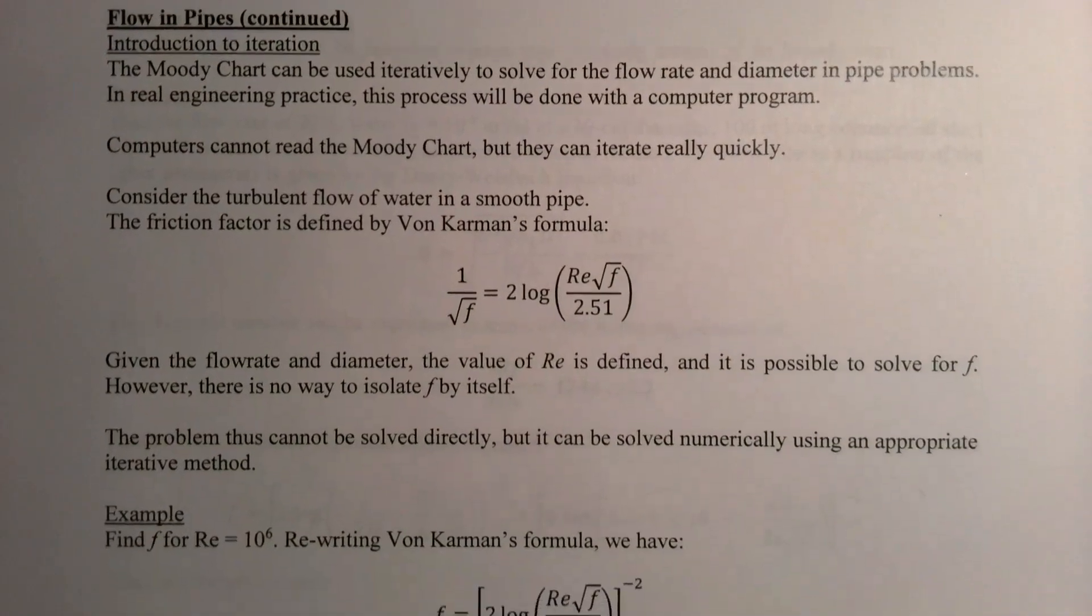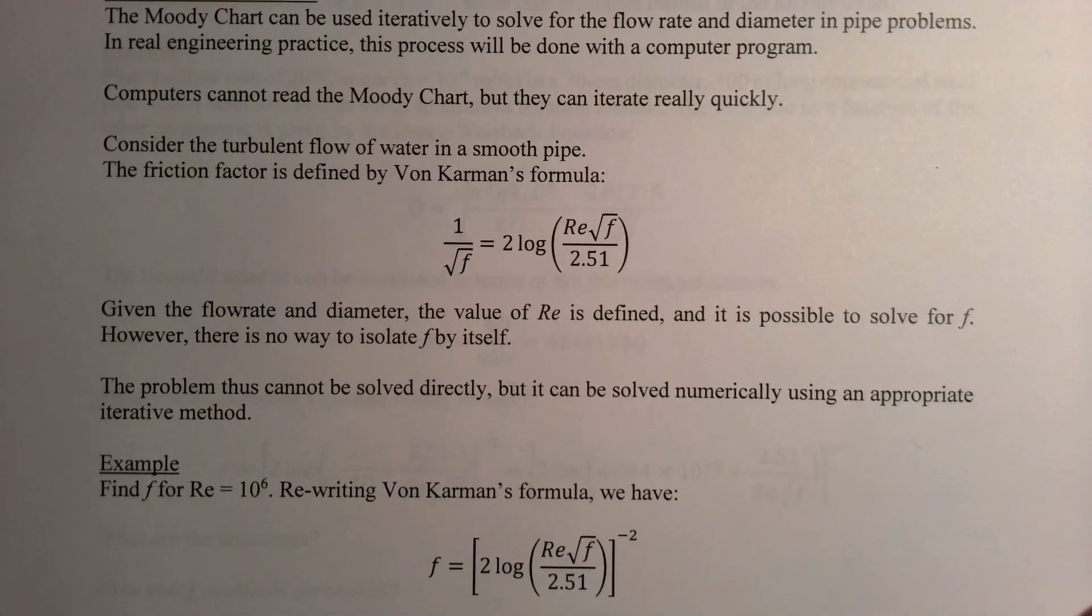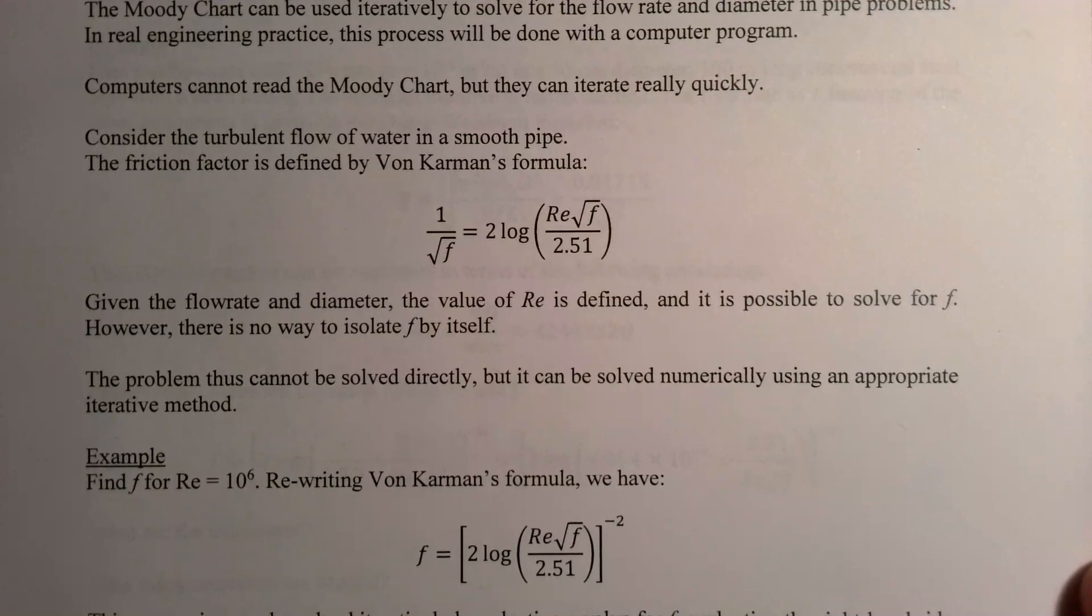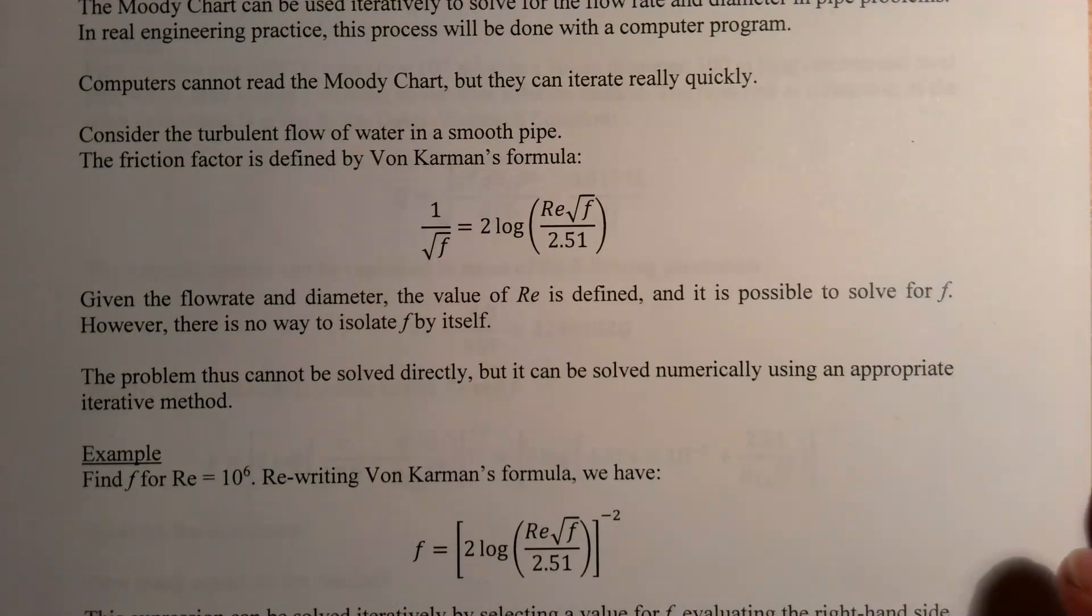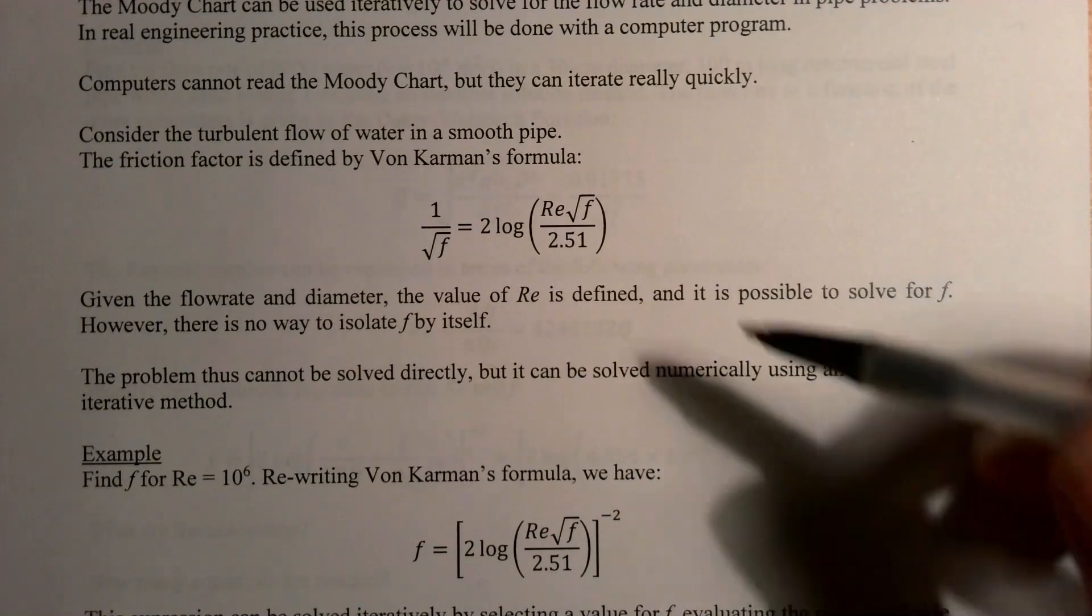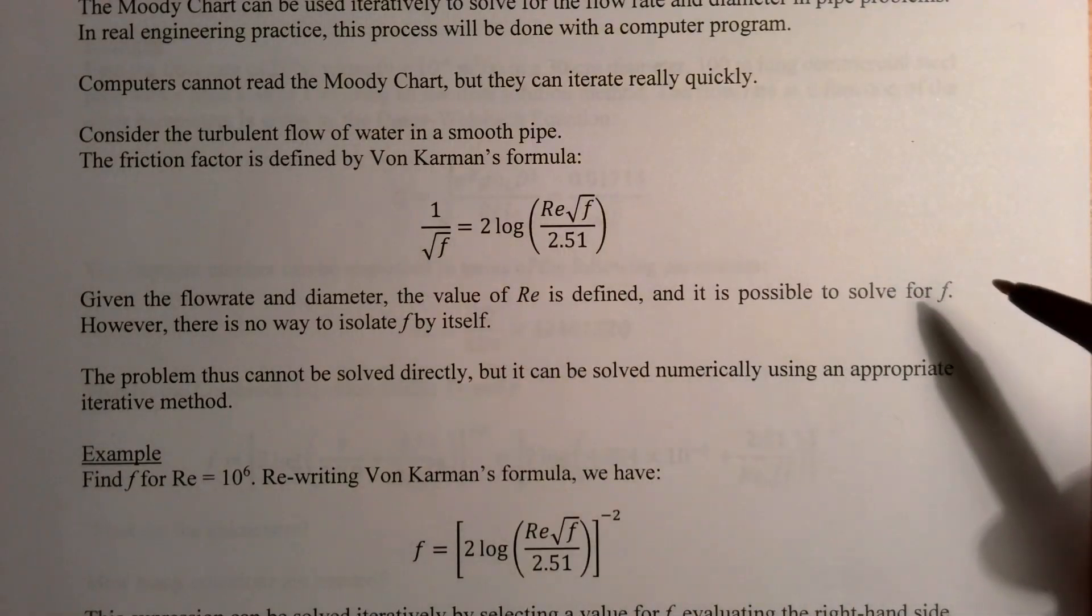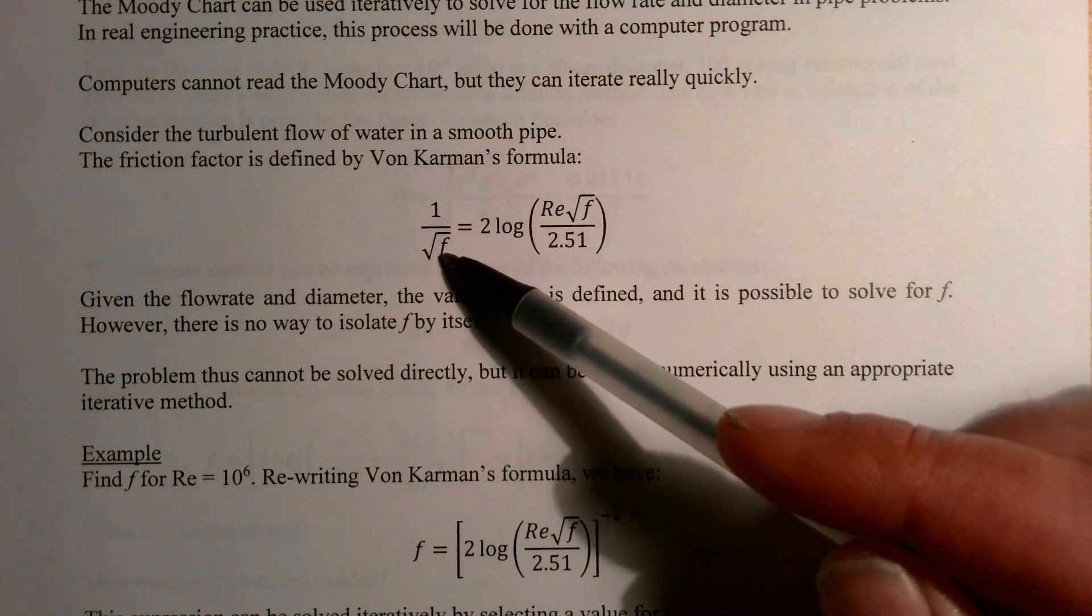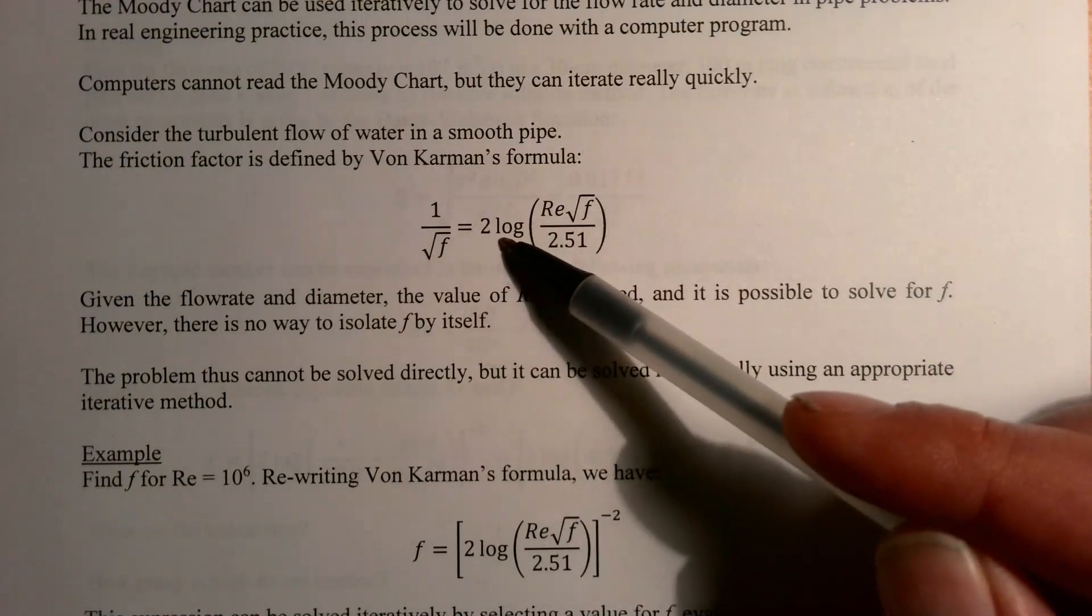Computers cannot read the Moody chart, but they can iterate really quickly. So as an example here, let's think about the Von Karman formula for the friction factor for a smooth pipe. A smooth pipe meaning that the thickness of the roughness height of the pipe is a lot less than the thickness of the boundary layer, the viscous layer at the edge of the pipe. In that situation, Von Karman developed this formula here that describes the friction factor.